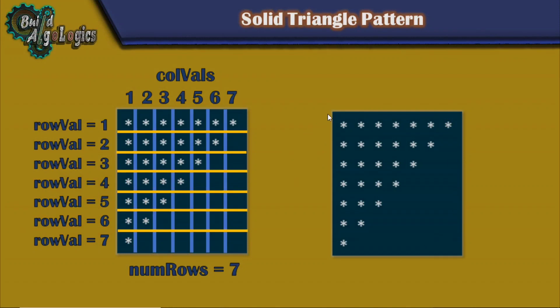First, we'll write our code to print this solid triangle pattern. To make it more visual from a programming point of view, I've drawn lines here for separating each row and column — you'll get this idea very soon. I'm using terms like rows and columns because we already discussed them in detail in our square patterns tutorial. You can watch my first tutorial of this series for a full explanation and codes for different square patterns. You can find the link at the top right corner and in the description of this video.